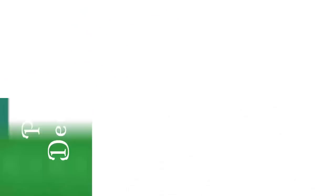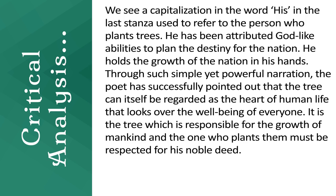Poetic Devices. Alliteration is a close repetition of consonant sounds, usually at the beginning of words. Examples from the poem include: 'He plants a friend of sun and sky,' 'He plants a home to heaven and I,' 'In hushed and happy twilight heard,' and 'He plants a flag of breezes free.'